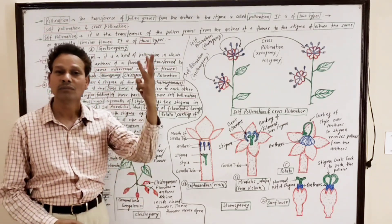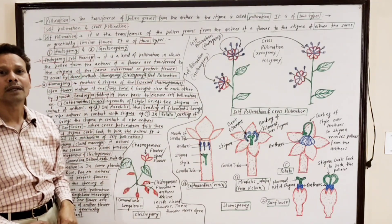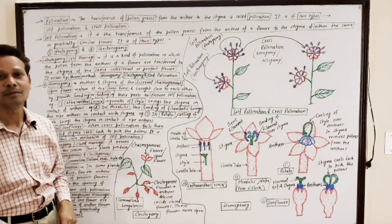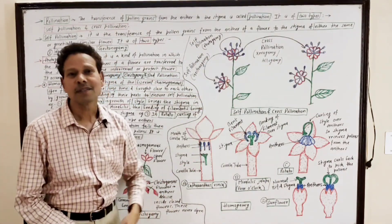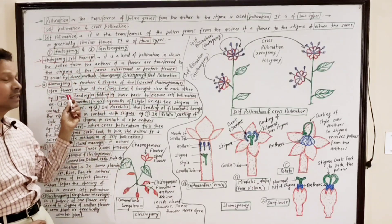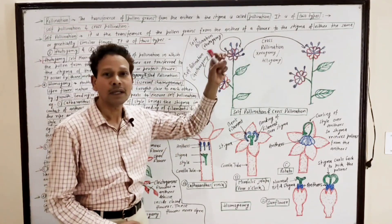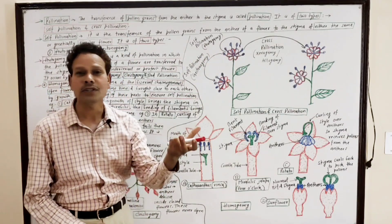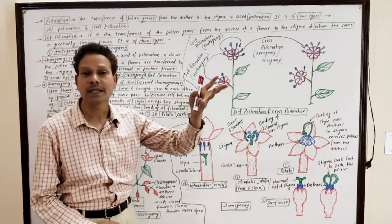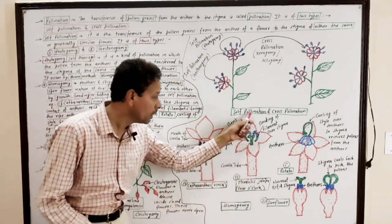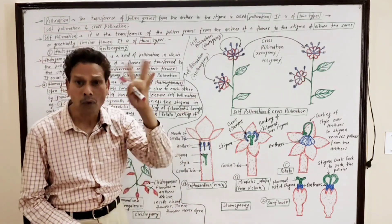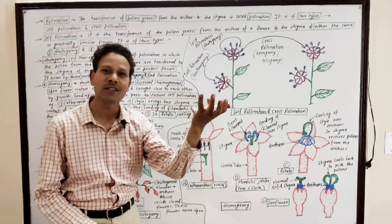Autogamy is further divided into three types. The first is homogamy. In homogamy, the anthers and stigma of the bisexual flower are of the open (chasmogamous) type. Both anther and stigma are brought close to each other either by the growth of their parts like the filament or style, or it may involve the bending, folding, rolling, or curling of the filament or style.